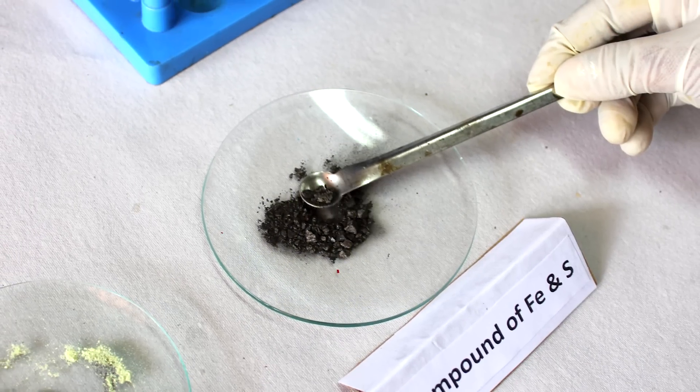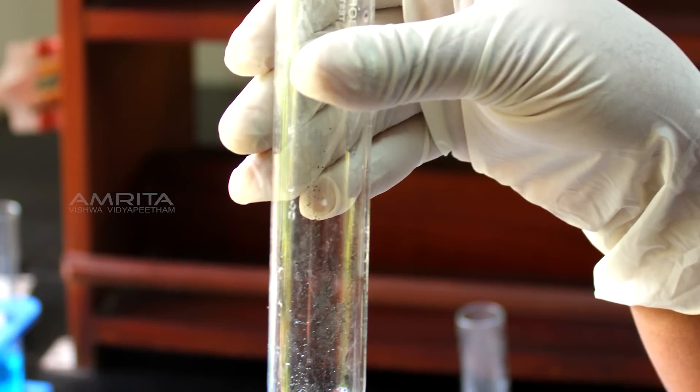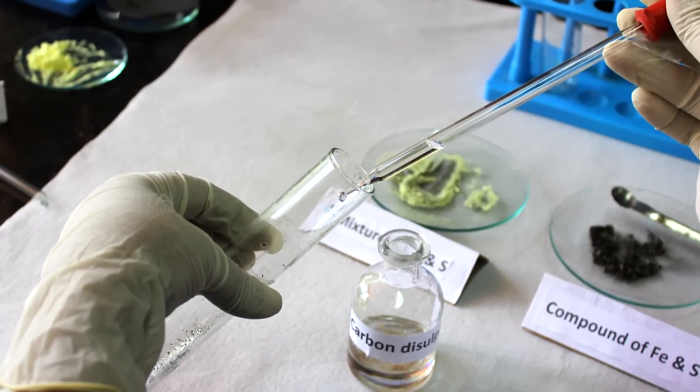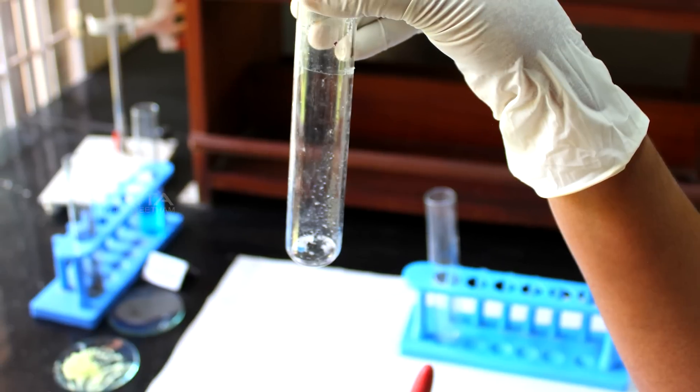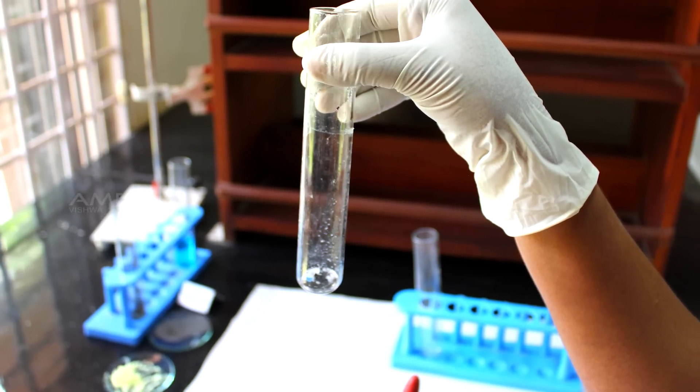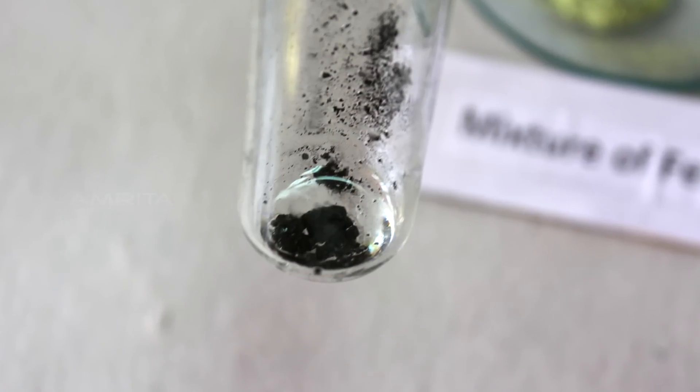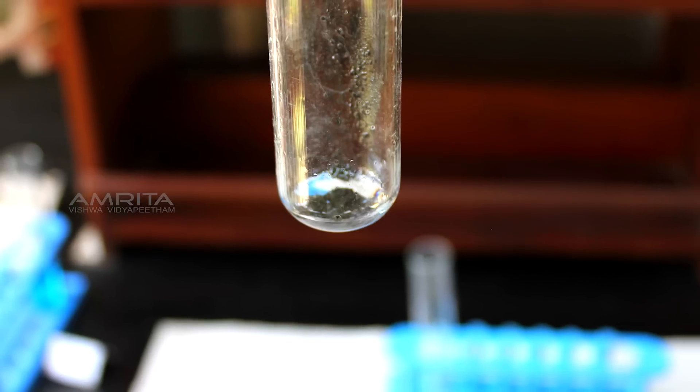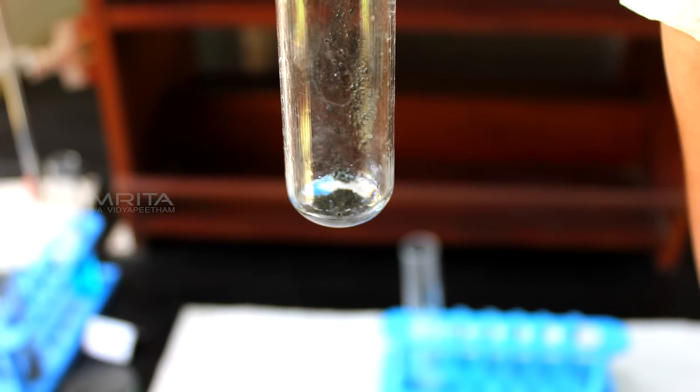Similarly, transfer a small quantity of compound to a clean boiling tube and add a few drops of carbon disulphide into it and shake the boiling tube well. Here, no change is observed which indicates that sulphur has lost its original properties after reacting with iron.